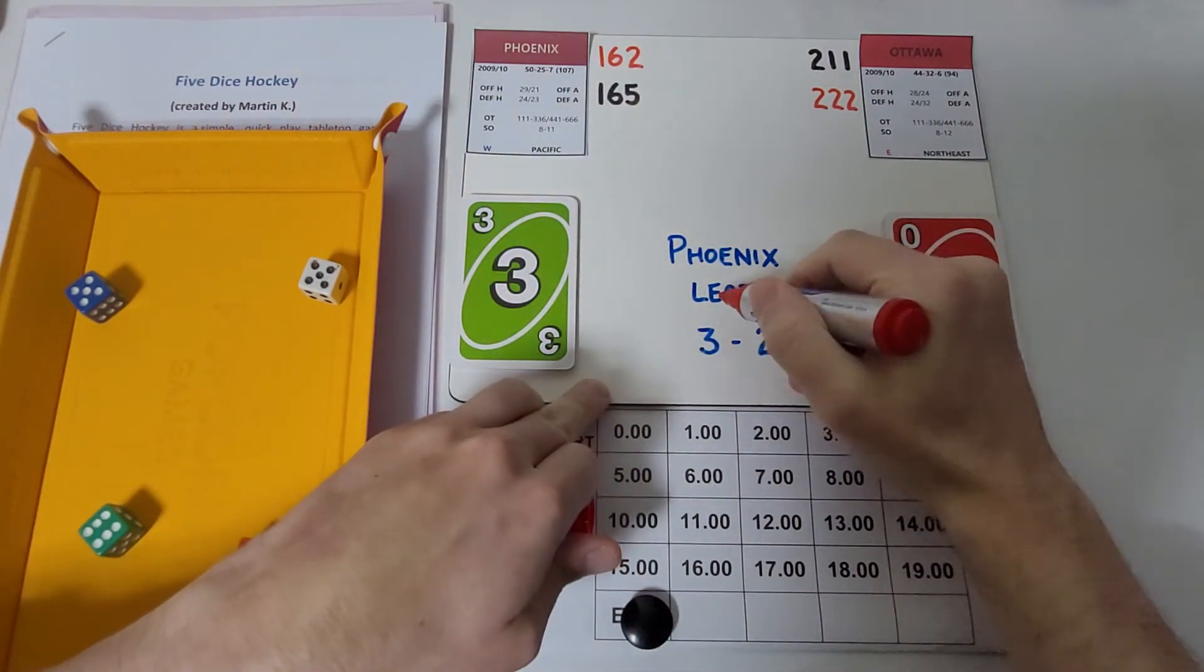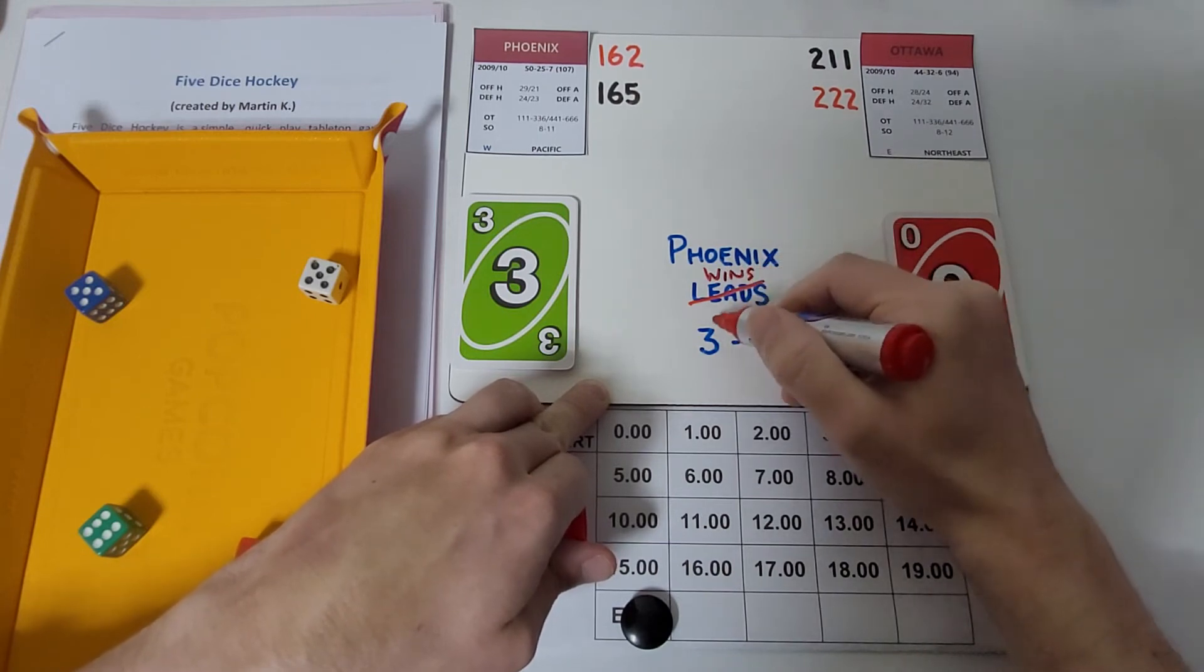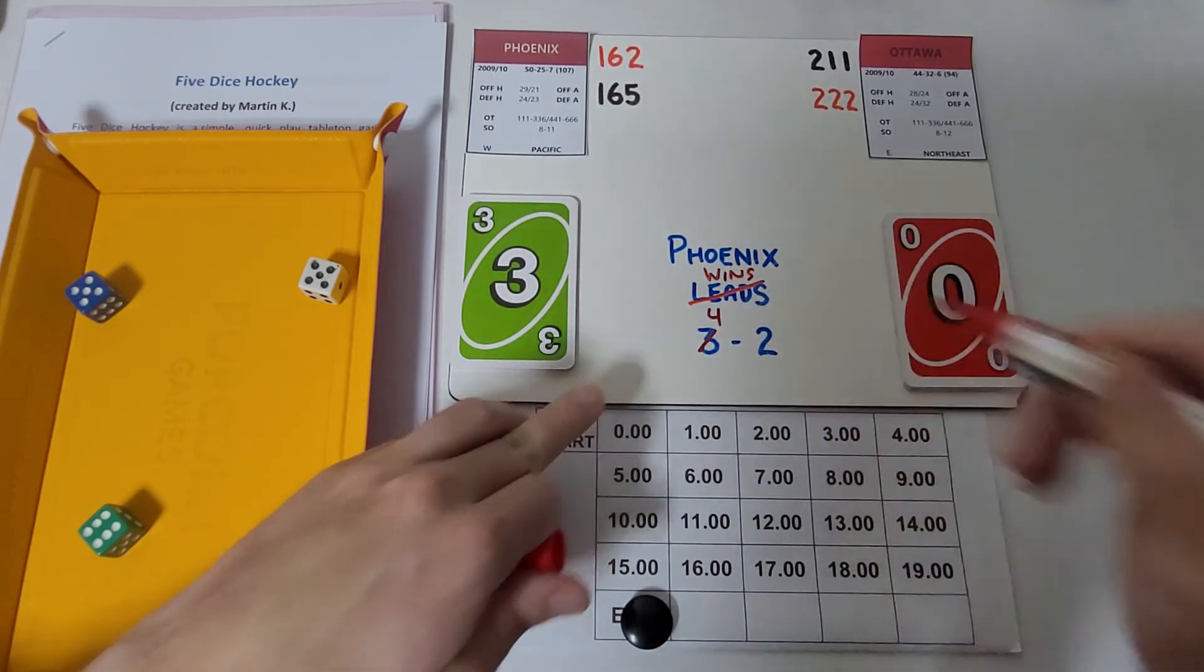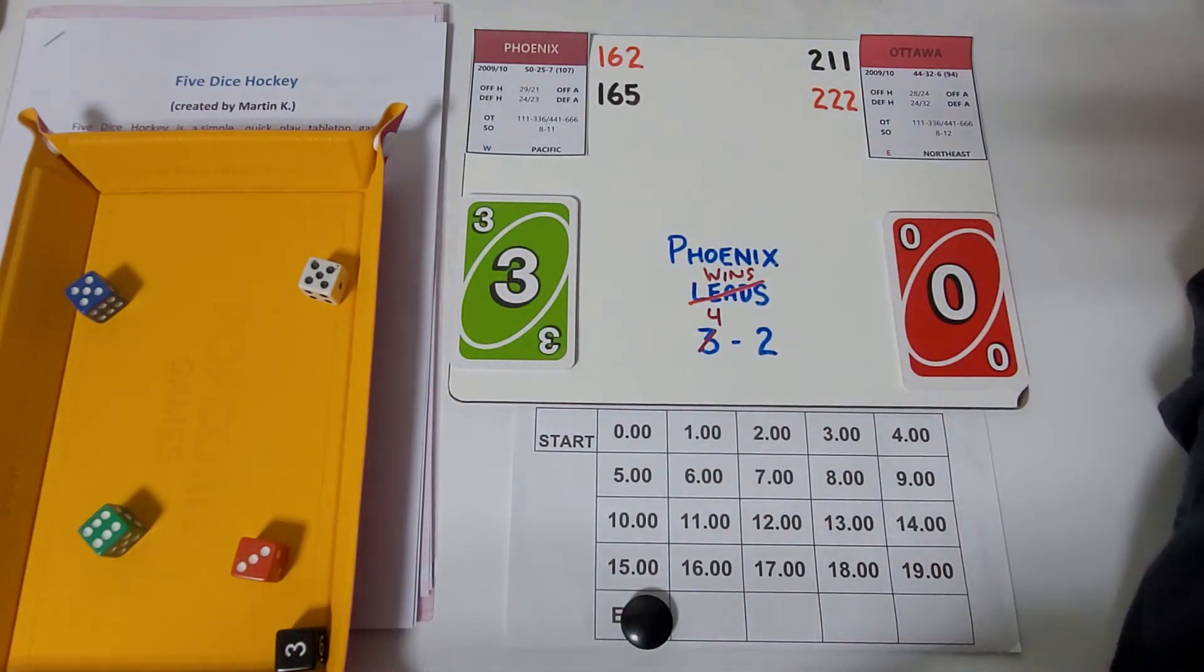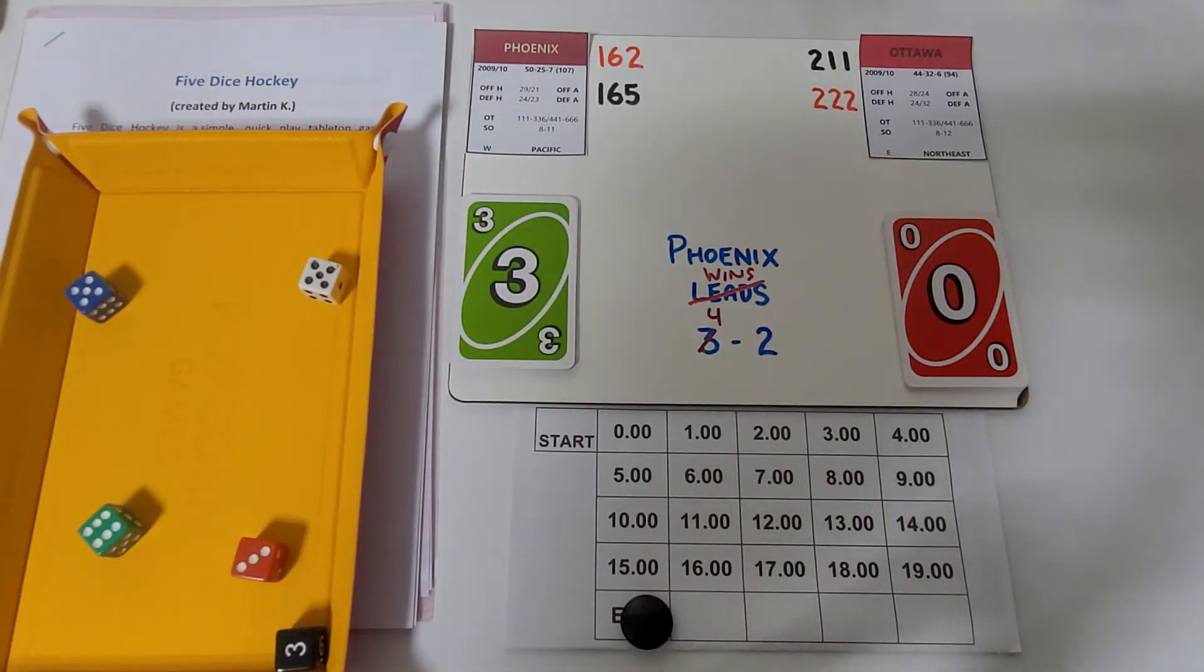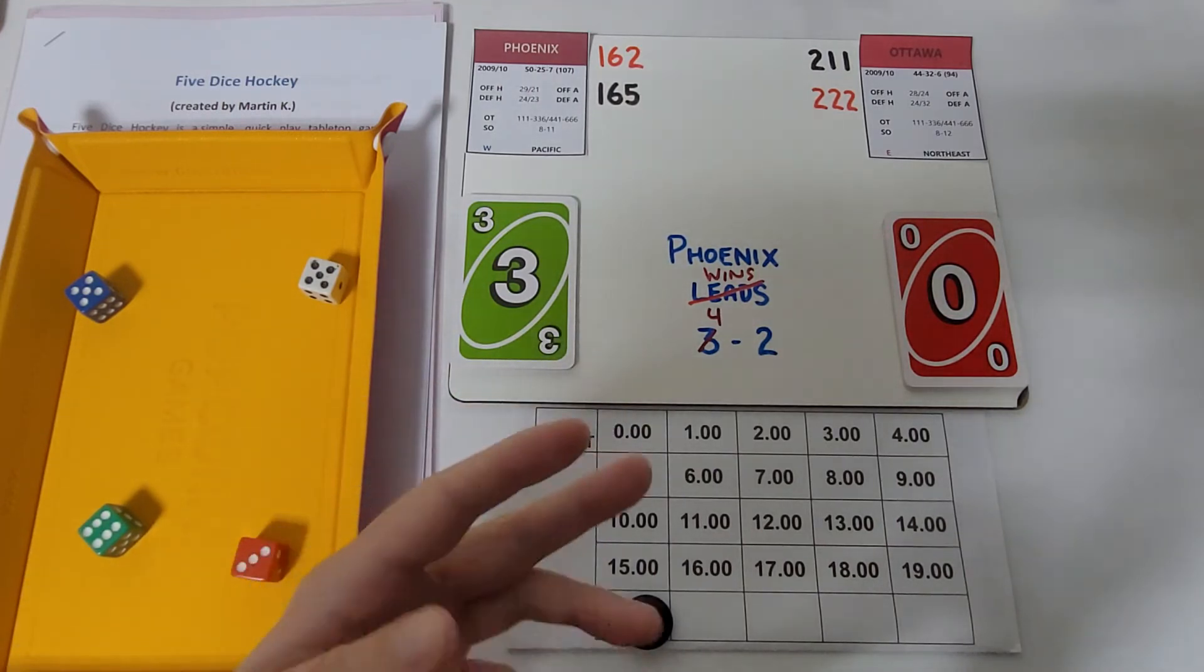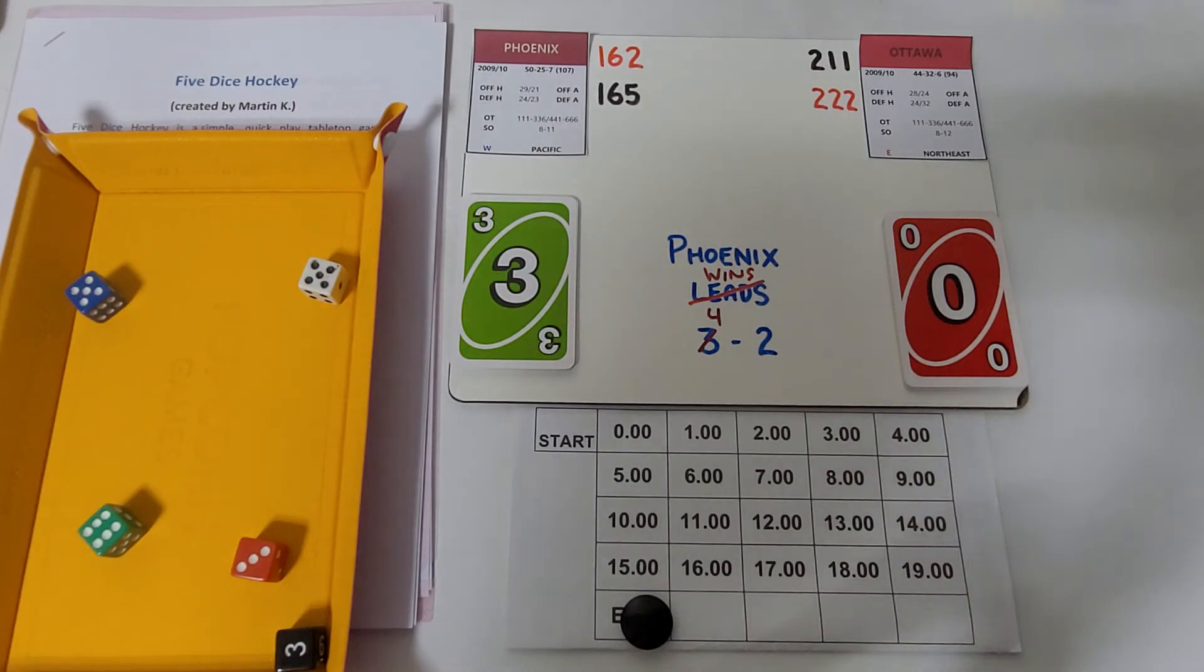Bryzgalov shuts Ottawa out of the series. Phoenix wins this series four games to two. They become the fourth team to advance to the second round. The next series I'm going to do is the Vancouver Canucks and Colorado Avalanche. Vancouver is up three games to two in that series as well.